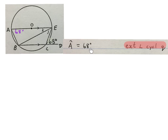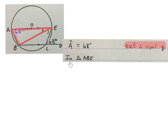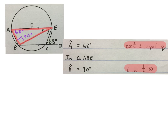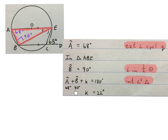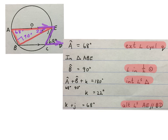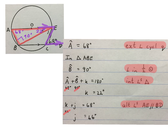We first write angle A equals 68 degrees — exterior angle of a cyclic quad, equal to the opposite interior angle. Now we go into triangle ABE, the red triangle. Angle B equals 90 degrees — angle in a semicircle. Then A plus B plus small k equals 180 — interior angles of a triangle. With A as 68 and B as 90, we get small k equals 22 degrees. Then small k plus small j equals 68 degrees — alternate angles, AE parallel to BD. Since k is 22 degrees, j equals 46 degrees.